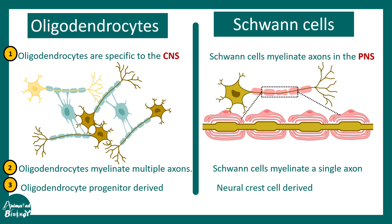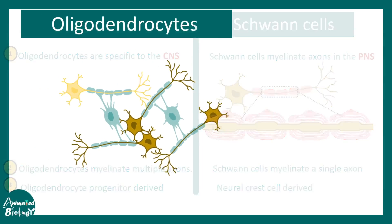Oligodendrocyte progenitors are neuronal progenitors, whereas Schwann cells are derived from the neural crest cells. These are the top three differences between Schwann cells and oligodendrocytes. Now let us elaborate on these differences.